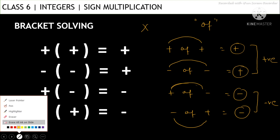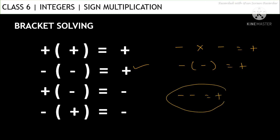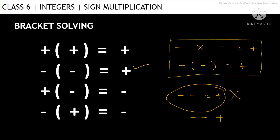One important thing to clarify: for any example, either say 'minus multiplied by minus gives plus' or 'minus of minus is plus.' We should avoid saying 'minus minus is plus.' Never say minus minus becomes plus, because this may create confusion when you move on to addition and subtraction of integers, where plus and minus symbols also appear. To keep sign multiplication separate and clear, always say either 'minus into minus' or 'minus of minus.'